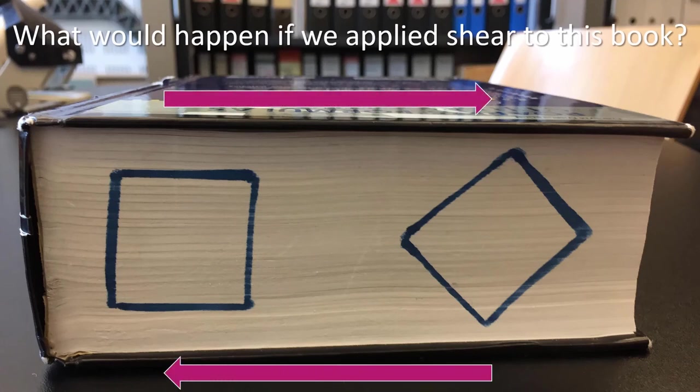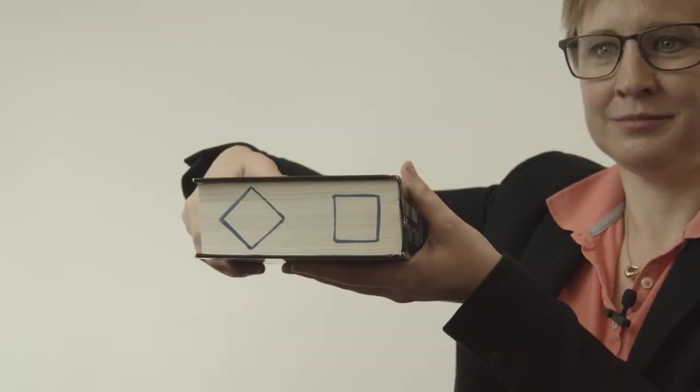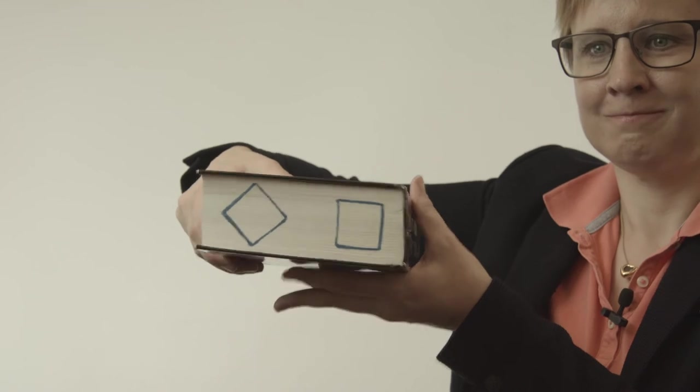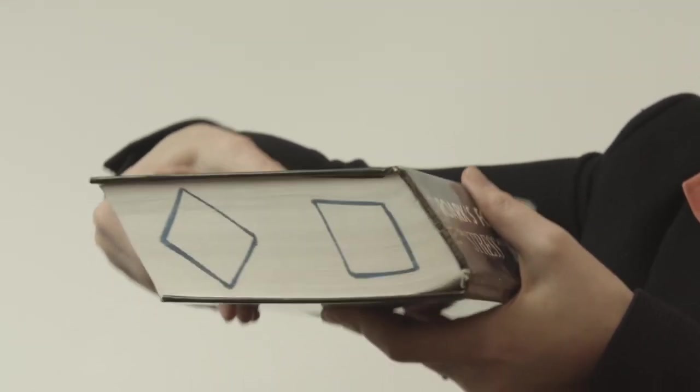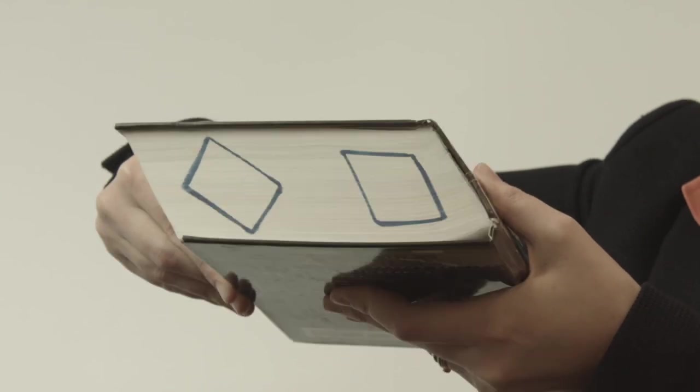What would happen if we have a shear force? Let us take a look at this book. On the side of the book, where you can see the pages, I have drawn a square and a diamond. If I apply a shear force to this book, acting parallel to the cover, you can see that the square and the diamond on the side of the book change shape as the pages start to move with respect to each other.